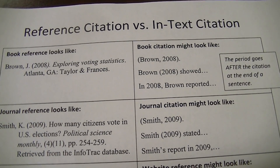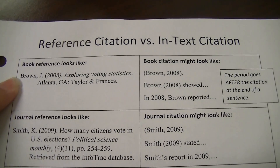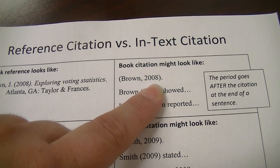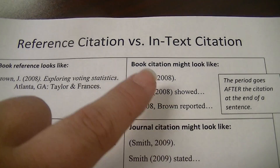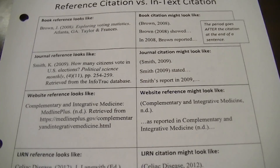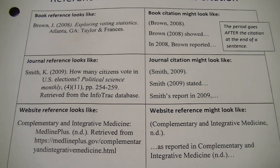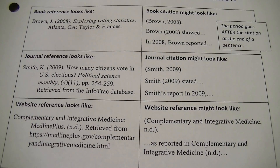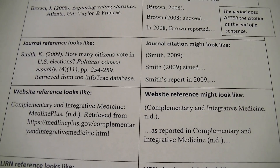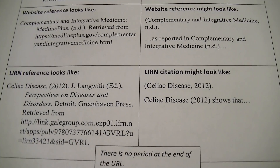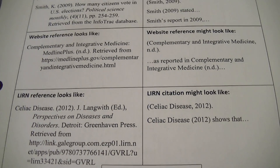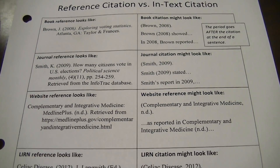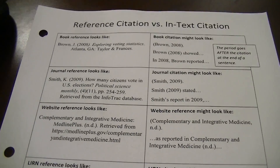Remember, reference citation versus in-text citation: on your reference page you'll have a full formatted line with last name and all the details, but in the body you just need the author's last name and year. You can write it as 'Brown in 2008 showed...' or 'In 2008, Brown reported...' — it doesn't matter how you do it, as long as you have the author's last name and the year. If you don't have the author's last name, use the article title. I'll do another video just on in-text versus reference citations, but that should get you started. If you have any questions, email me at mwilliams@southerntech.edu. Have a good one!